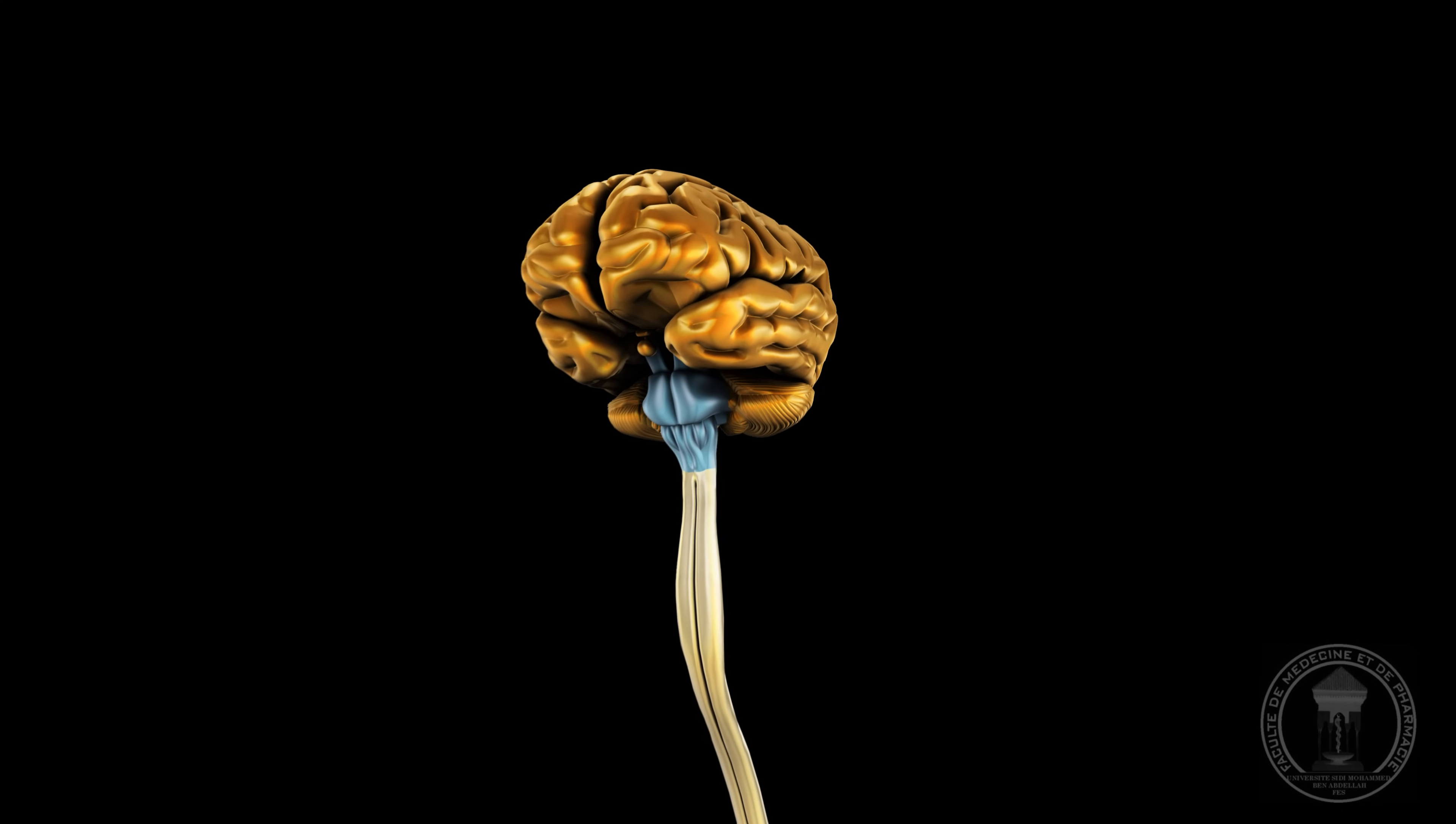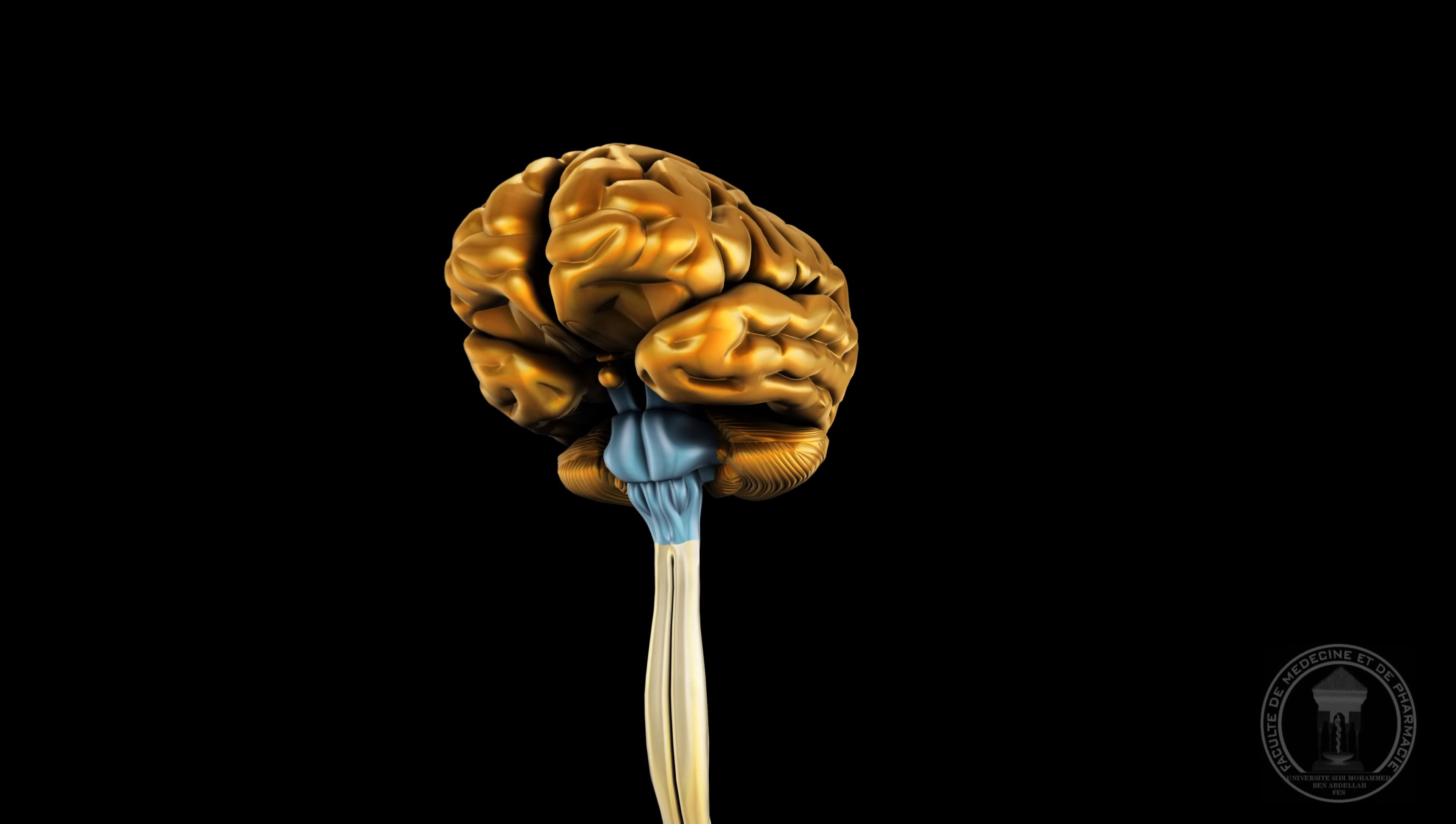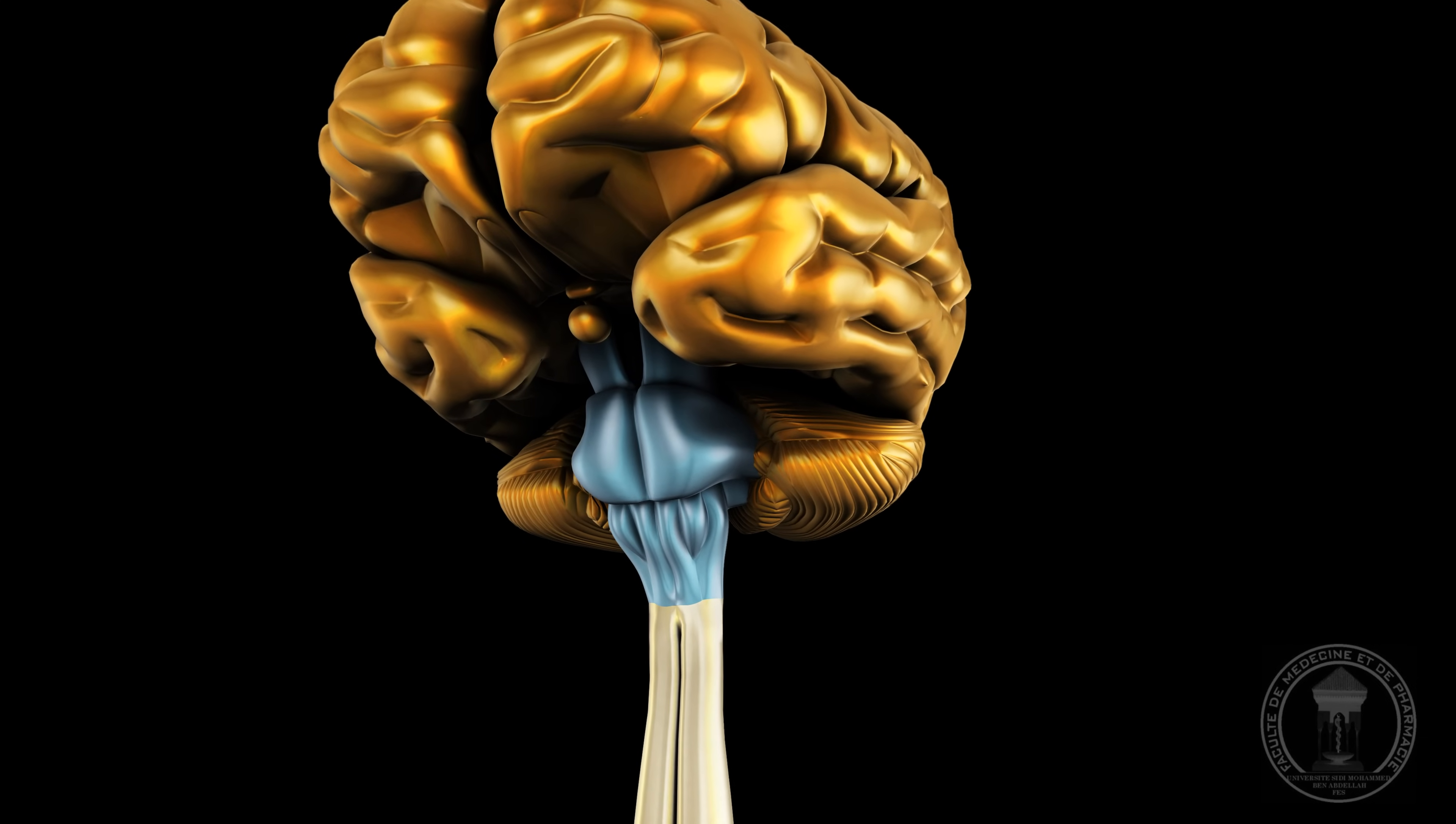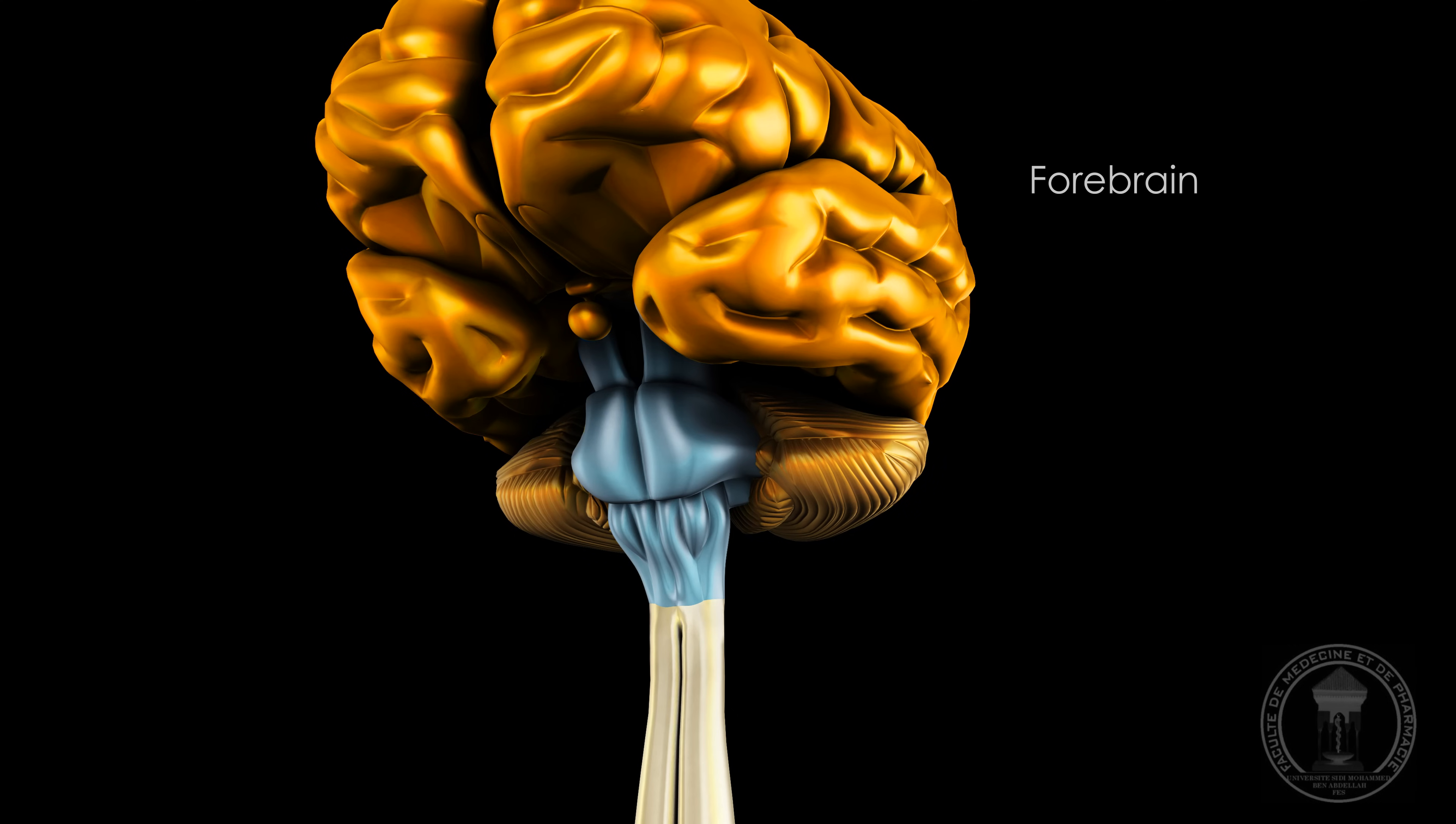The brainstem is the brain anatomical structure that links different parts of the central nervous system: the forebrain, the cerebellum and the spinal cord.